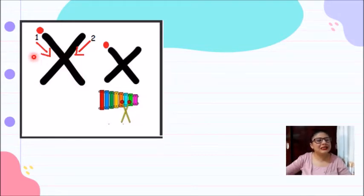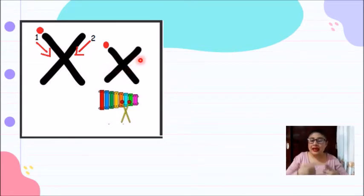Entonces, aquí tenemos a la letra X mayúscula y a la letra X minúscula. Ahora, en casita, con tu dedito, vas a realizar el trazo de la letra X en el aire. Lo puedes hacer utilizando la X que está en la pantalla del dispositivo en el que estás viendo el video. Lo vas a hacer tanto con la letra mayúscula como con la letra minúscula.